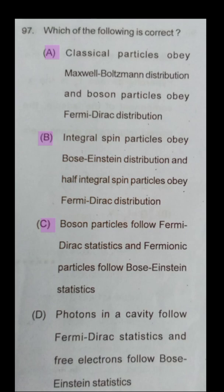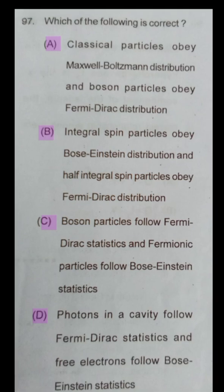Option C: Boson particles follow Fermi-Dirac statistics and Fermionic particles follow Bose-Einstein statistics. Option D: Photons in a cavity follow Fermi-Dirac statistics and free electrons follow Bose-Einstein statistics.